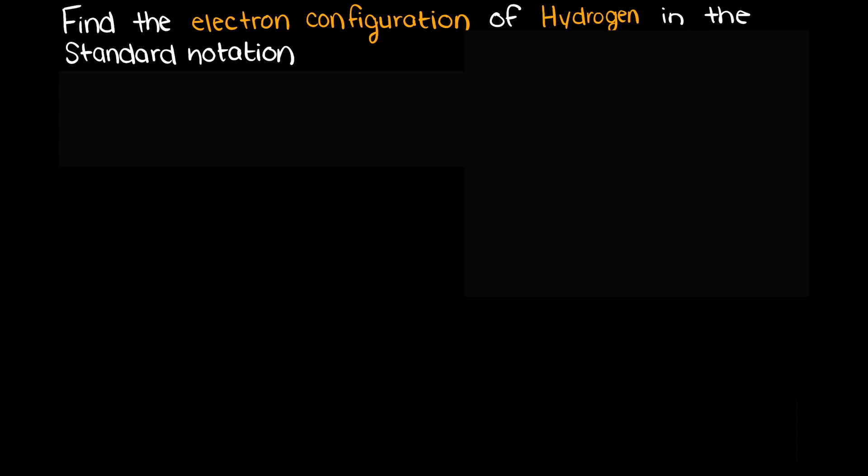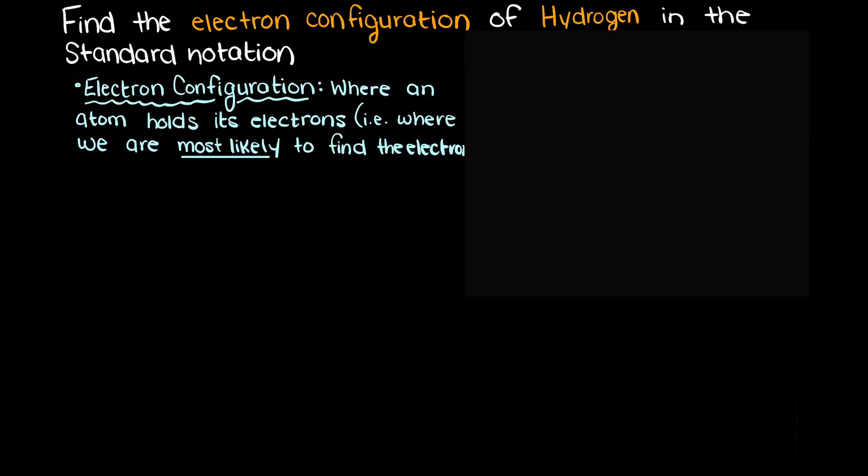When finding the ground state electron configuration of an atom, we are being asked where does this atom place its electrons, i.e. what shells and orbitals are its electrons most likely to be found in?